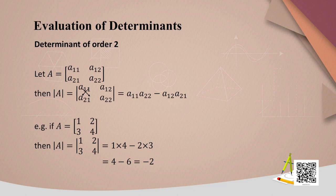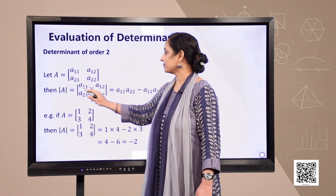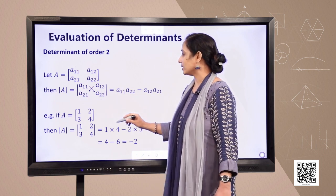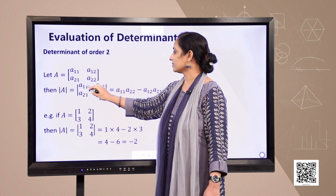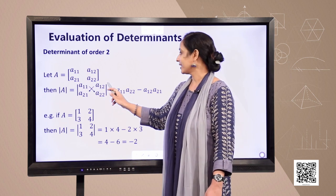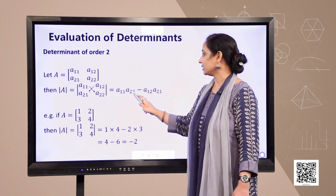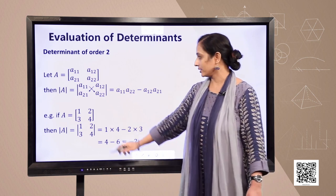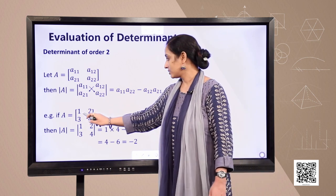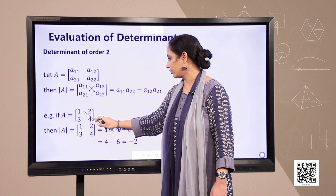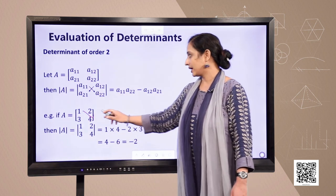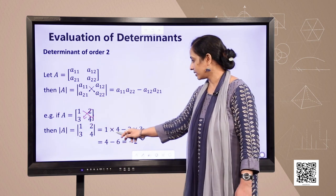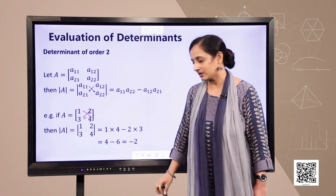Let us learn how to evaluate the determinant of order 2. If A is a 2×2 matrix with elements written in generalized form, you multiply the diagonal elements: A11 × A22 minus A12 × A21. For example, with matrix A = [1, 2; 3, 4], element 1 is multiplied by 4 and element 2 is multiplied by 3, giving 4 − 6 = −2.